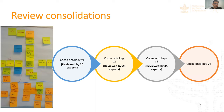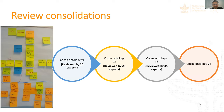We started with mind maps with COCOA experts and agronomists. The first version was reviewed by around 20 experts within the COCOA SOIL research and development internal team. The second version was reviewed by 25 experts, the third by 35 experts, and now we have COCOA ontology version 4, which is more or less stable. We have also collected enough data over the four years of the project to show all the classes and relationships in practice.